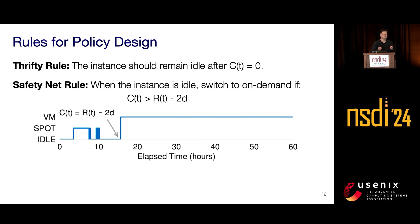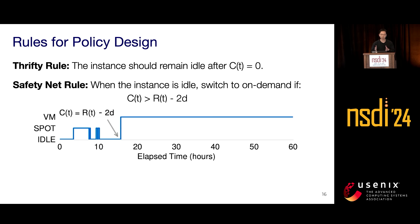The Safety Net rule is a bit harder to understand. When the instance is idle, we have to switch to on-demand if CT is larger than RT minus 2D. This is because, once the job is idle and this condition holds, to meet the given deadline we cannot afford switching to a spot instance and then switching to on-demand once spot is preempted — that is where the 2D comes from. The policy must play safe after the condition holds and place the job on on-demand instances afterwards, to avoid additional changeover delay causing a missed deadline.